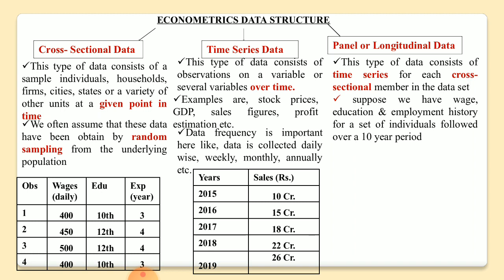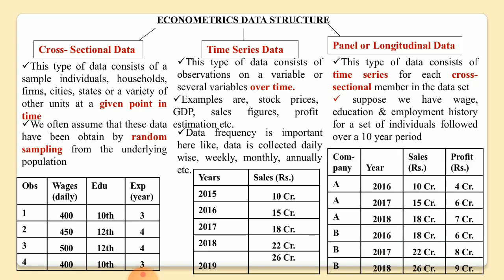For example, if we have collected wages, education, and employment history for a set of individuals — say five or ten individuals — followed over a ten-year period, that is panel data. In the panel data format shown here, we have Company A and Company B, and data on sales figure and profit have been collected from 2016 to 2018. For each company in the data set, we collect data over the same period of time.